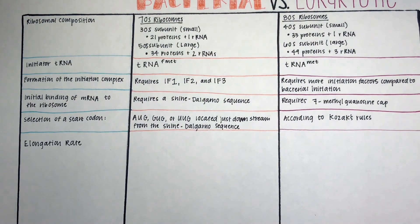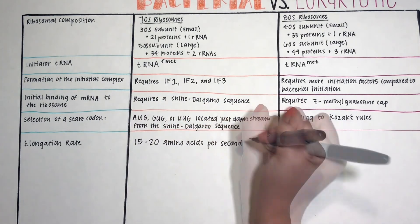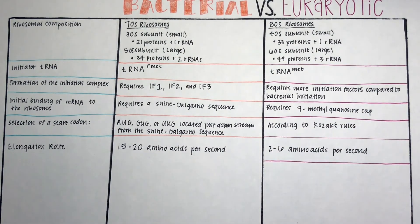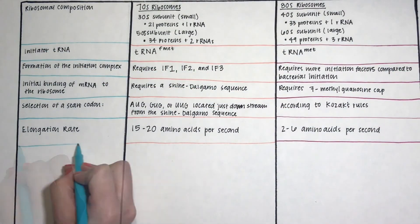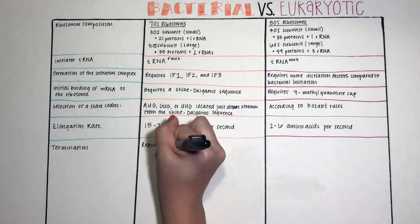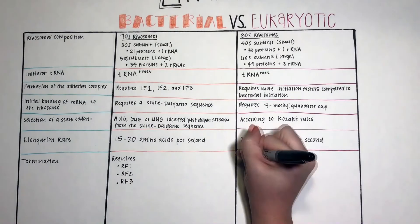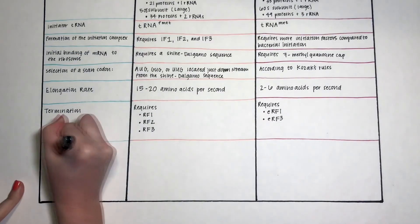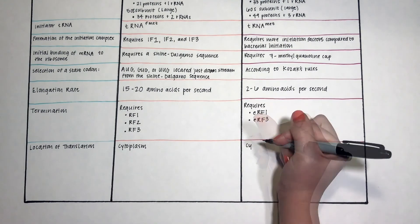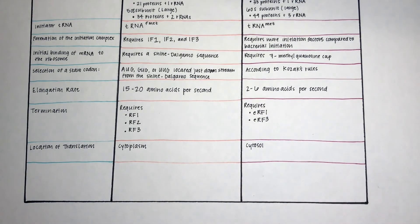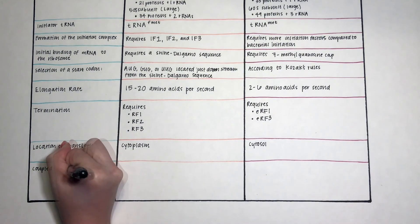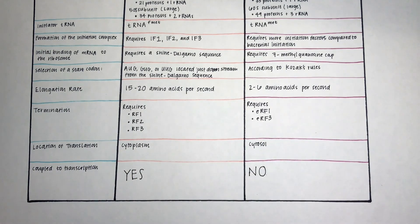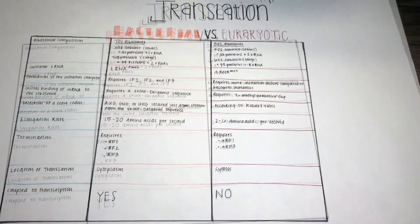The elongation rates for bacteria and eukaryotes also differ. In bacteria, the rate is typically 15 to 20 amino acids per second, while in eukaryotes it is only 2 to 6 amino acids per second. Termination for bacteria requires RF1, RF2, and RF3, while eukaryotes require eRF1 and eRF3. Translation occurs in the cytoplasm in bacteria and in the cytosol in eukaryotes. Bacteria are coupled to transcription; however, eukaryotes are not coupled to transcription.